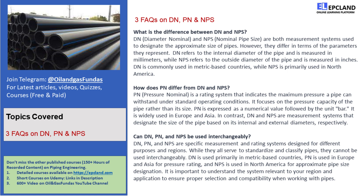Question 2: How does PN differ from DN and NPS? Another great question! PN, or Pressure Nominal, is a rating system that indicates the maximum pressure a pipe can withstand under standard operating conditions. It focuses on the pressure capacity of the pipe rather than its size. PN is expressed as a numerical value followed by the unit bar, and is widely used in Europe and Asia.